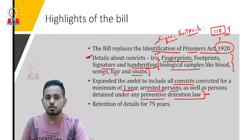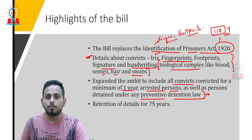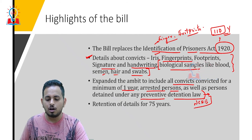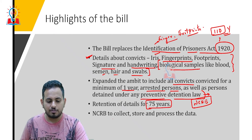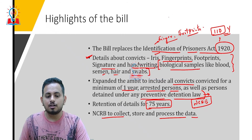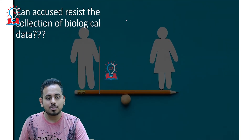As for what is done with the collected data — this data will be processed and stored with an organization called NCRB, the National Crime Records Bureau, for a span of 75 years. NCRB will collect, store, and process the data for 75 years.